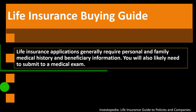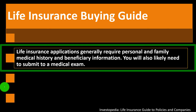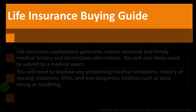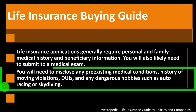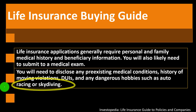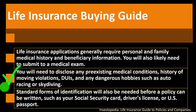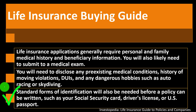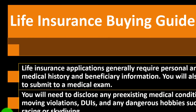Life insurance buying guide: life insurance applications generally require personal and family medical history and beneficiary information. You will also likely need to submit to a medical exam. You will need to disclose any pre-existing medical conditions, history of moving violations, DUIs, and any dangerous hobbies such as auto racing or skydiving. Standard forms of identification will also be needed before a policy can be written, such as your social security card, driver's license, and U.S. passport. We'll continue on with this in the following presentation.